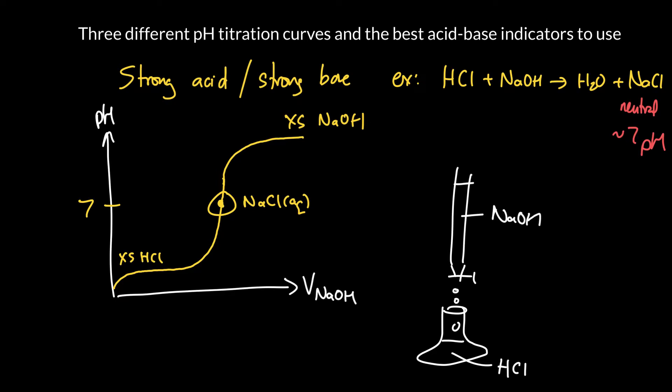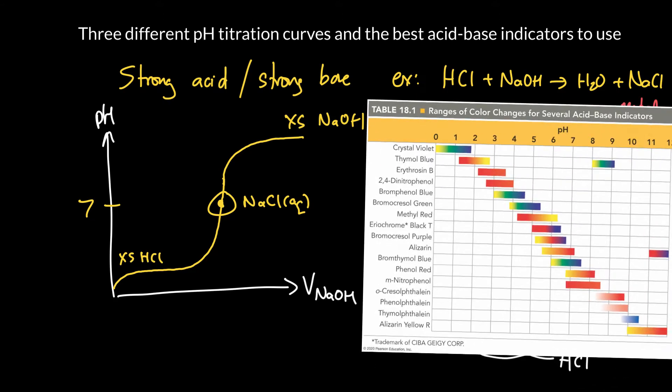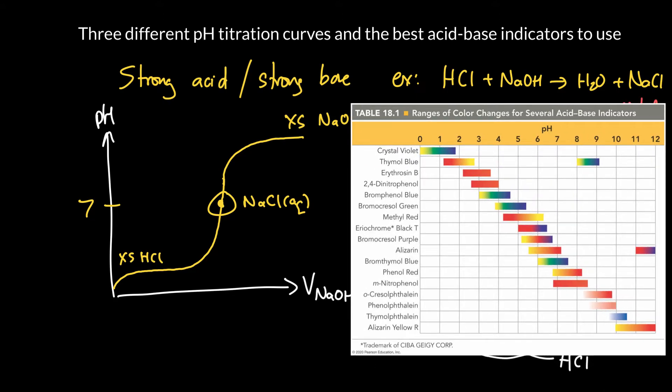In terms of an indicator, how do you know when you've reached this pH? I'm going to pull down the chart of indicators we saw last time. I want something that's going to change color in this region here about six to eight. So something like bromothymol blue might be pretty good.